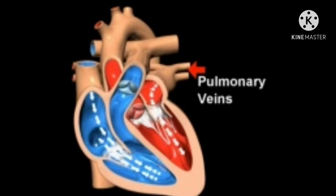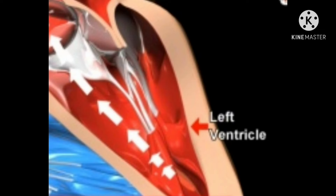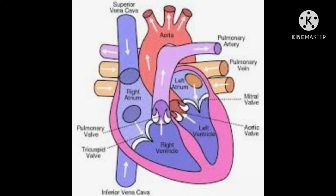The lower side of the left atrium is connected to the left ventricle. Oxygenated blood from the left atrium goes into the left ventricle, and the left ventricle is connected to the main artery called the aorta. The left ventricle pumps oxygenated blood into the main artery for taking it to all the body organs except the lungs.